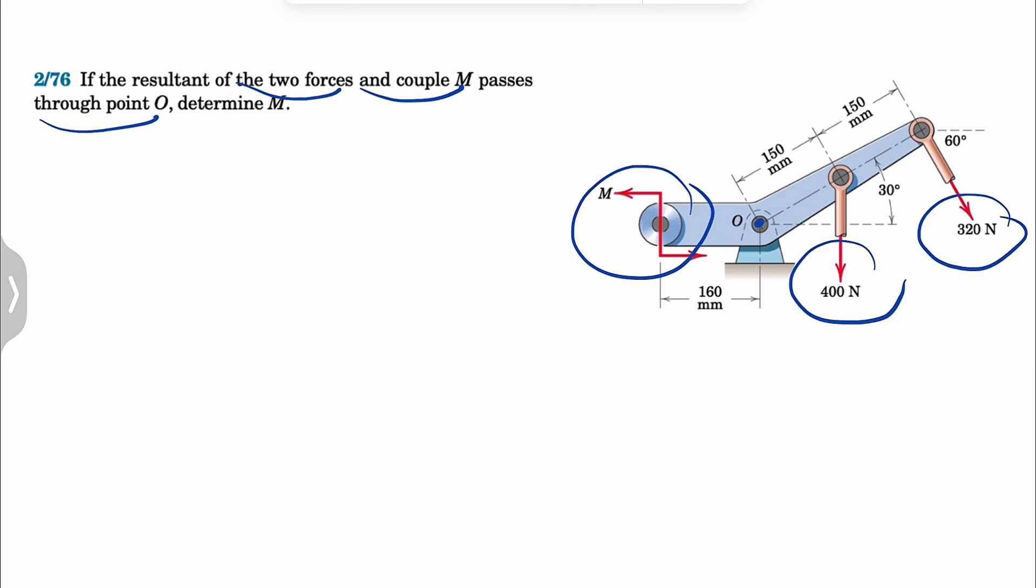And what that means is we have a force at O, which we know the moment of that force about point O is going to be zero. The reason is that there is no distance between. So our moment is R times F times sine of theta. In case the R and F are perpendicular, this will be one. So when there is no R, our R is zero, the moment will be zero.